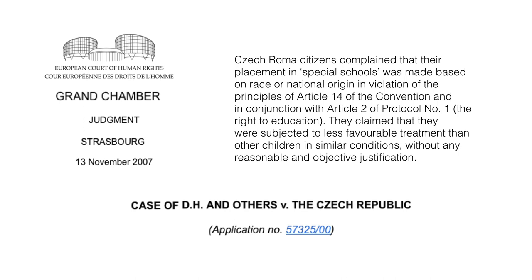In DH and Others v. the Czech Republic, Czech Roma citizens complained that their placement in special schools was made based on race or national origin, in violation of the principles of Article 14 of the Convention, and in conjunction with Article 2 of Protocol No. 1, the right to education. They claimed that they were subjected to less favorable treatment than other children in similar conditions, without any reasonable and objective justification.